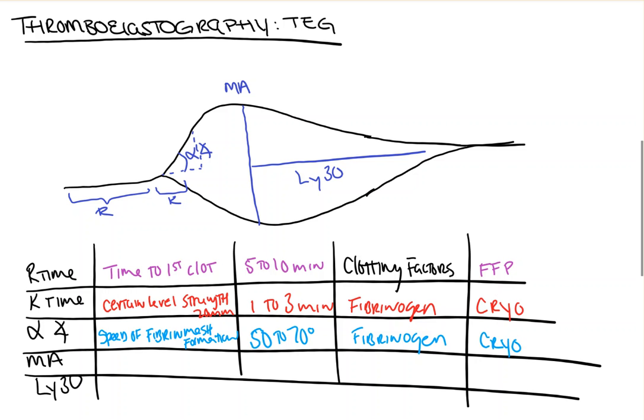Our max amplitude, as you might have guessed, is our final strength of clot, max clot strength. It also helps to represent the overall stability of the clot. A normal value is about 55 to 70 millimeters. And if lower than that, represents a problem with platelets. And you should treat by giving platelets.